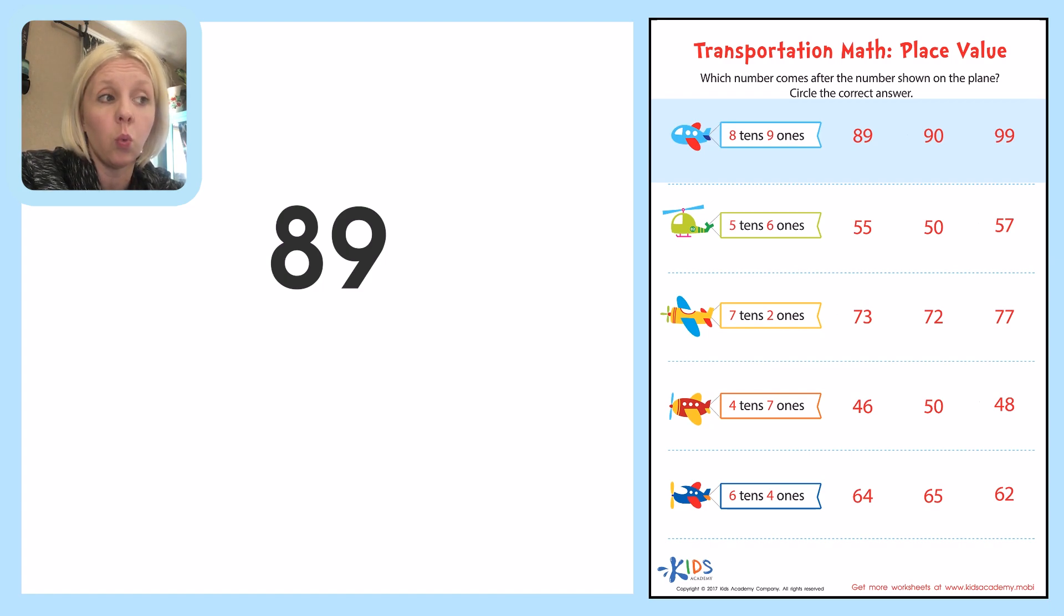So if we were counting, what would be the number that would come after 89? Well, normally we're just looking at the ones place and the ones will change. But when we come to 9, we don't go to 10. We actually go to 0 and then the tens place moves up 1. So the next number we would put 0 after the 9 and then the tens place would move up 1, which would be 9.